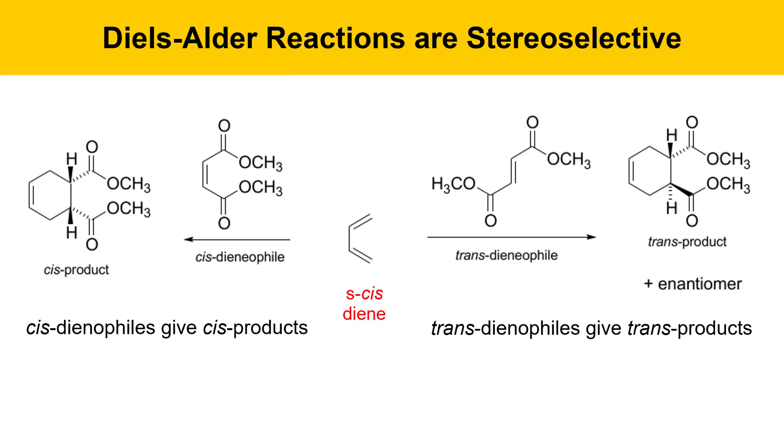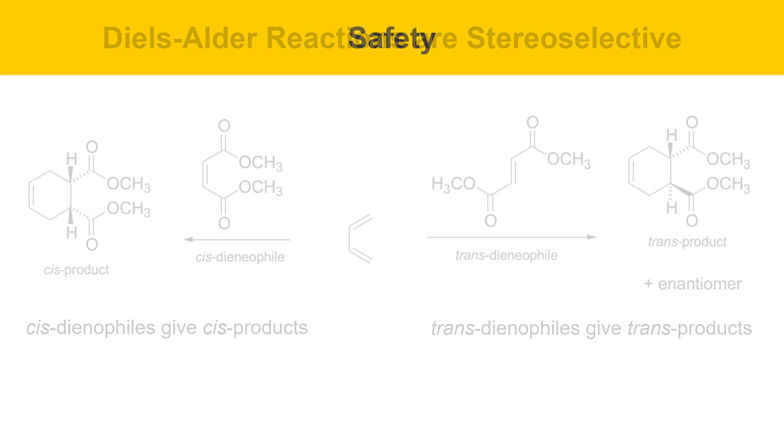Diels-Alder reactions always have S-cis dienes, but they may have trans or cis dienophiles.